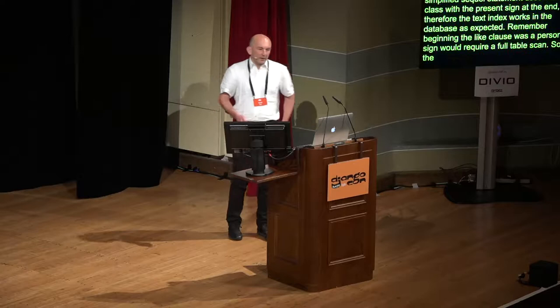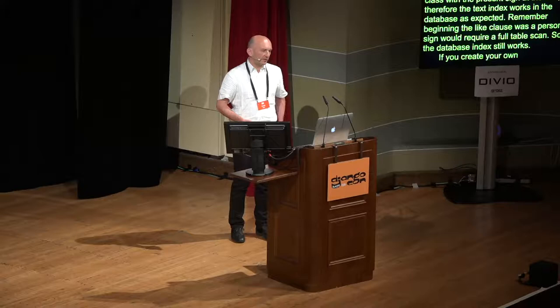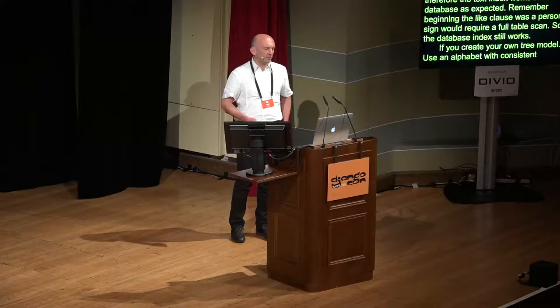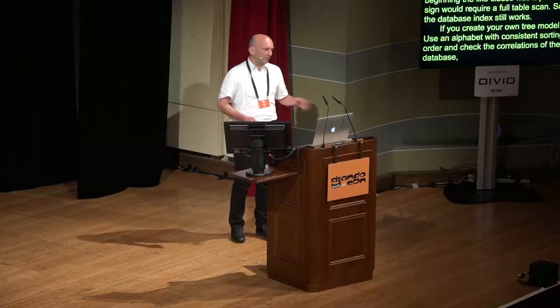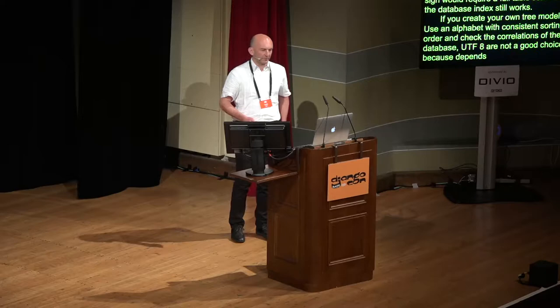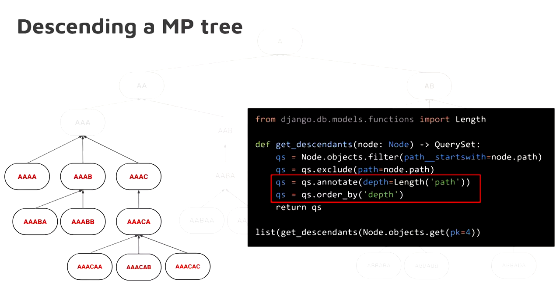If you create your own tree model, use an alphabet with a consistent sorting order and check the collations of your database. UTF-8 characters in your alphabet are not a good choice, because depending on your database settings and language settings, they may have different sorting orders. With this short addition to the code, we can return the query set ordered by depth level.